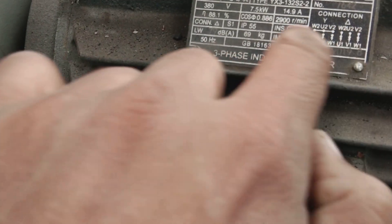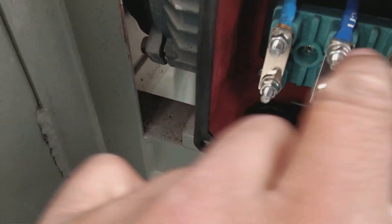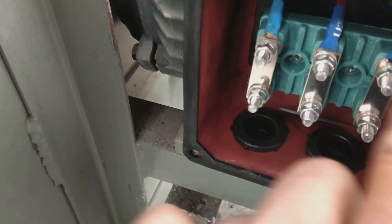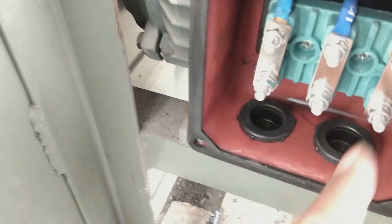This diagram shows star connection if these jumpers or bus bars were positioned here. That would be star connected, but in this case it's delta connected.